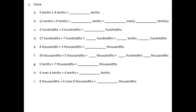All right boys and girls, we are back with Module 1, Topic D, Lesson 9. Our objective today is to add decimals using place value strategies and relate those strategies to a written method. We're going to be talking a lot about place value and how we have either like place value units or units that are not alike.